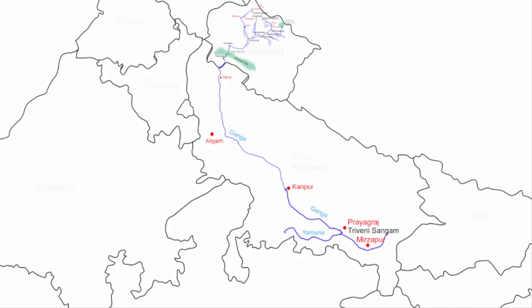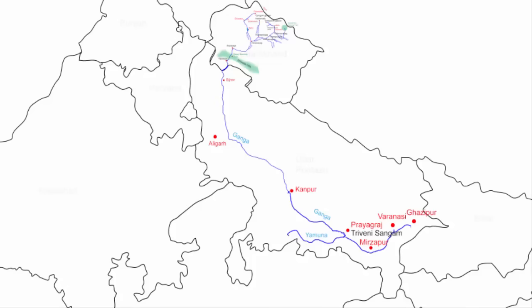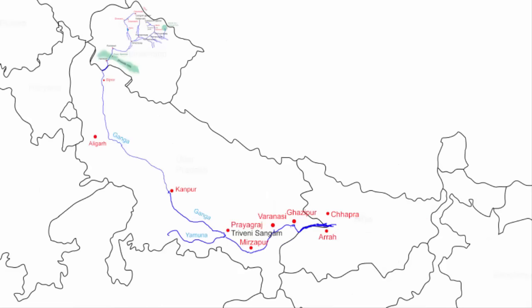River Ganga then takes an eastern course and flows through the city of Mirzapur. In about 60 to 65 kilometers it reaches Varanasi, then heads towards Ghazipur. From Ghazipur in about 35 kilometers, river Ganga reaches the border of Uttar Pradesh and Bihar, flowing along that border for about 100 kilometers before fully entering Bihar from the district of Ara. The Ganga splits Bihar into North Bihar and South Bihar.